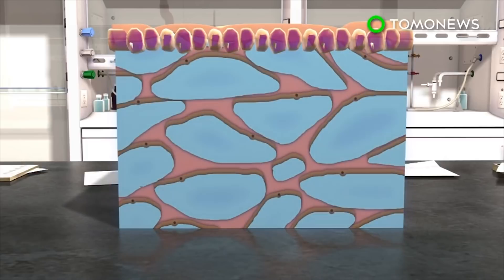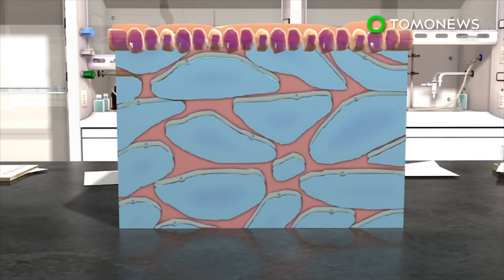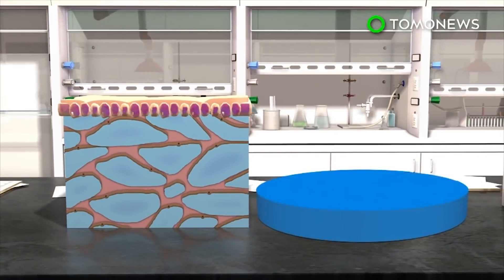Researchers say the interstitium is a body-wide structure of lymph fluid, collagen, and proteins. The organ is also believed to comprise 20 percent of all bodily fluids.